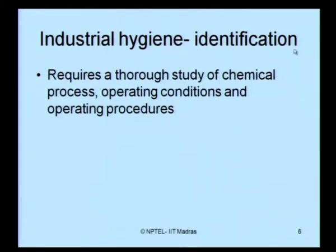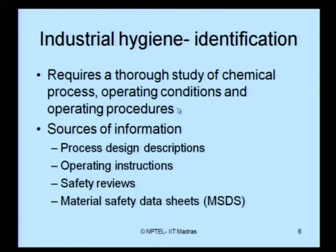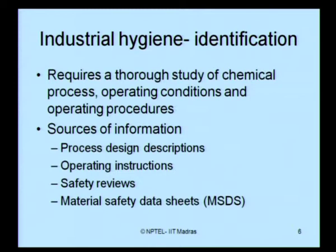Identification requires a thorough study of the chemical process, operating conditions, and operating procedures. Sources of information include detailed process and design descriptions, operating instructions, safety reviews and methodologies, and material safety data sheets (MSDS), which describe the toxic nature of inventories stocked in the plant during operation.